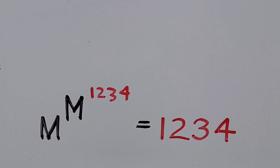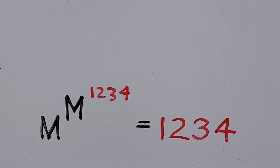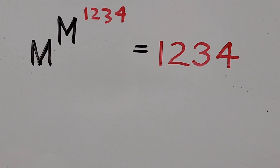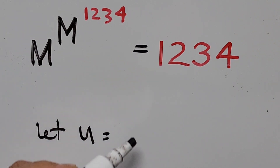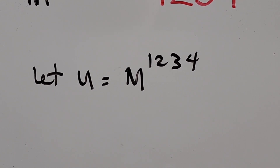Let's start. If you notice the nested exponent, we can simplify it. We can designate a variable to stand for that number: m to the power of 1234. So let's define that variable — we'll let u stand for m to the power of 1234.